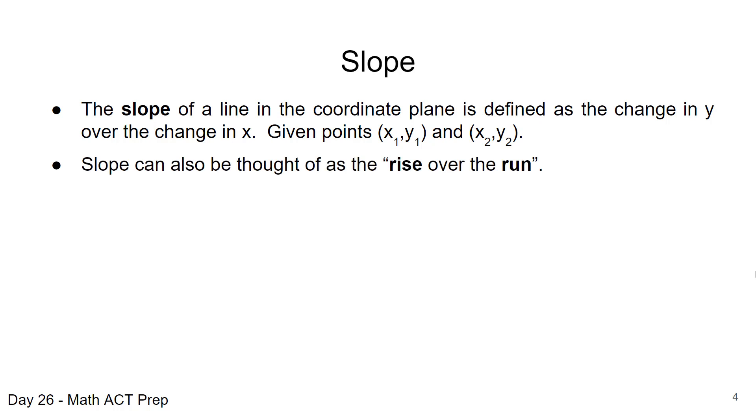You may have also heard slope being referred to as rise over the run, and slope is usually represented by the variable m, and we'll talk about that when we look at the equation of the line using the slope-intercept form. So if you're given these two points, x1, y1, and x2, y2,